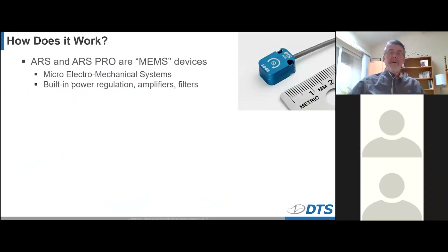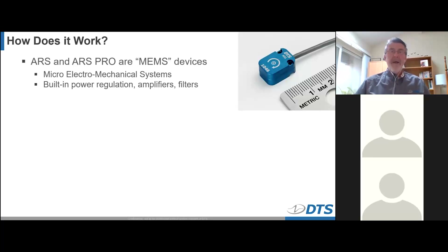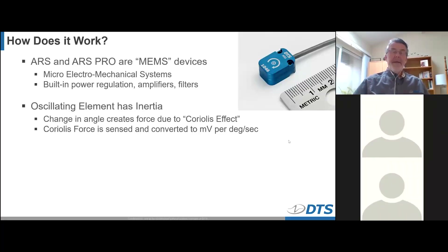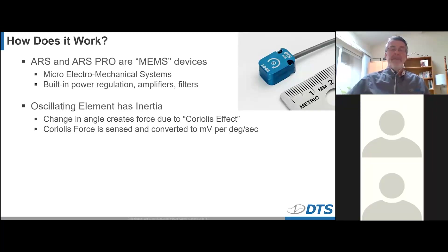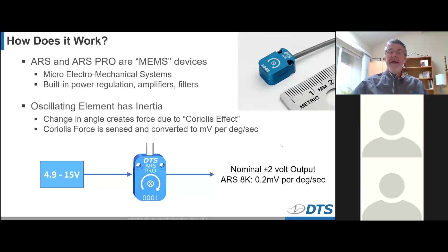So how does an ARS work? The ARS and ARS Pro devices, as well as devices from other manufacturers, are what we refer to as MEMS — Micro Electromechanical System — devices. These have a sensing element plus built-in power regulation, amplifiers, and filters. It's actually a very complicated device given its small package. The principle is we use an oscillating, vibrating element with inertia. When we excite that element to oscillate and then try to change its angle, a force is created due to what we call the Coriolis effect. The Coriolis force is sensed and converted to millivolts of output per degree per second.